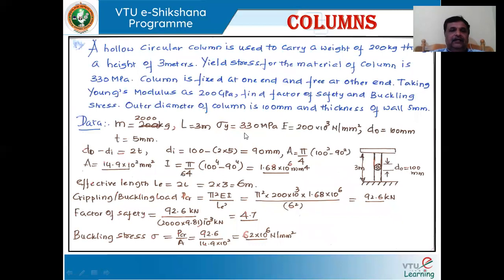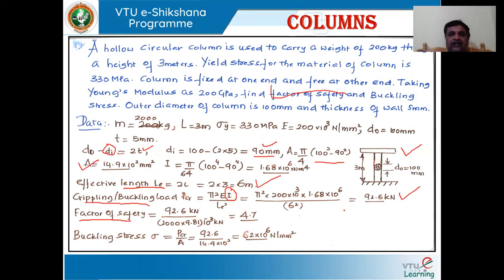Let us see this problem. A hollow circular column is used to carry a weight of 200 kg through a height of 3 meters. It has a yield stress of the material of column as 330 MPa. The column end conditions are: it is fixed at one end and free at the other end. Taking the Young's modulus as 200 GPa for the material of which the column is made.